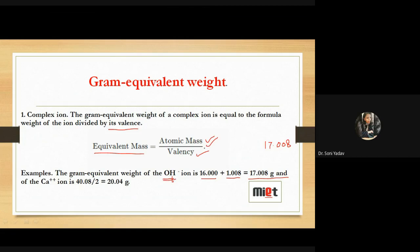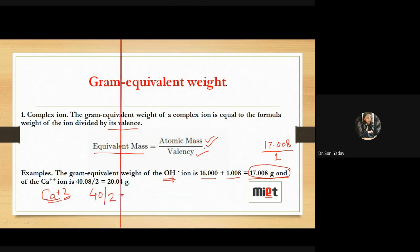Now talking about calcium Ca²⁺ ion: molar mass is 40.08. Calcium has a +2 charge, so divide by 2. In complex ion cases, you calculate the total weight or atomic mass and divide by the valency factor or charge of the ion to get the gram equivalent weight.